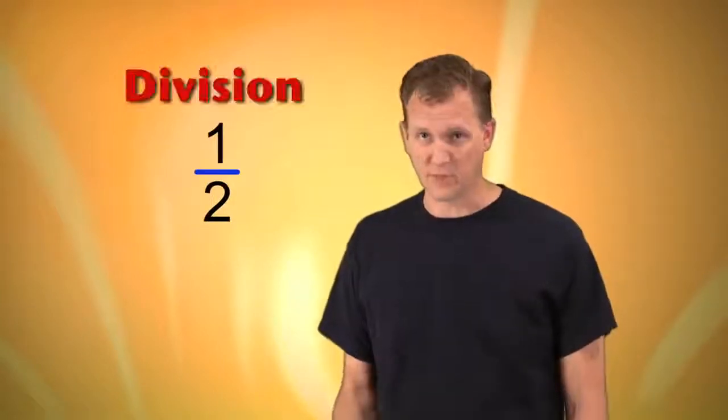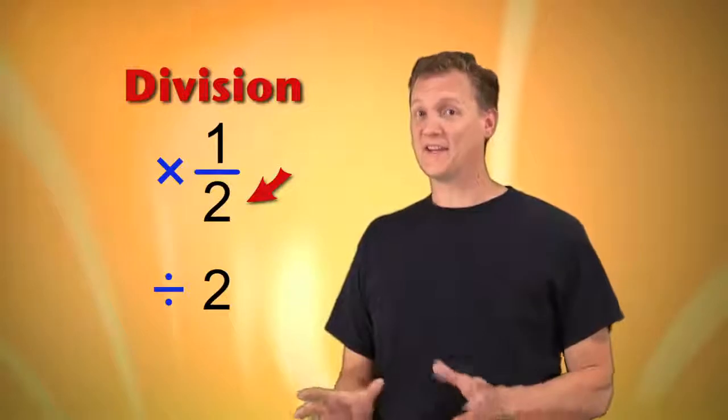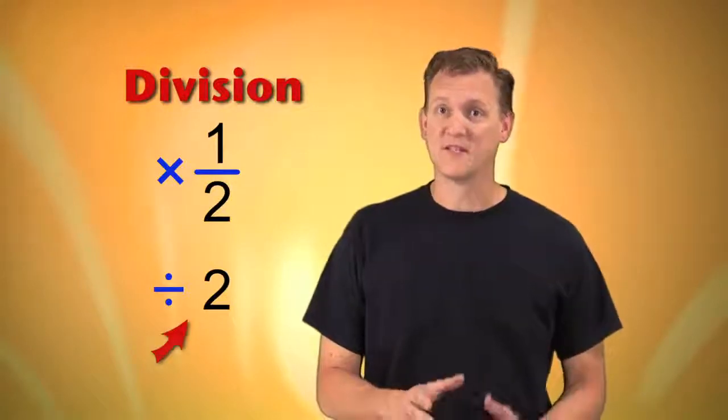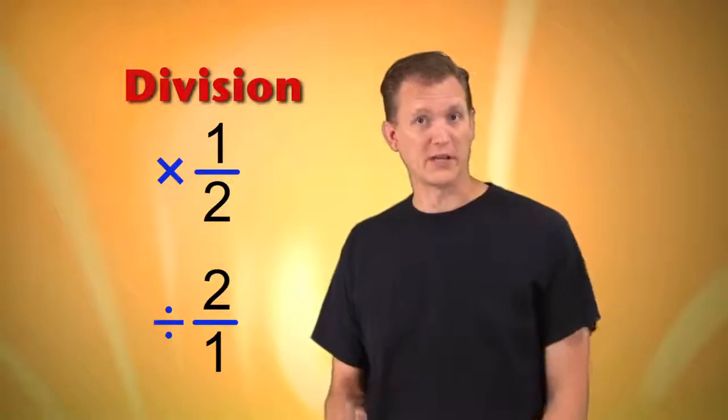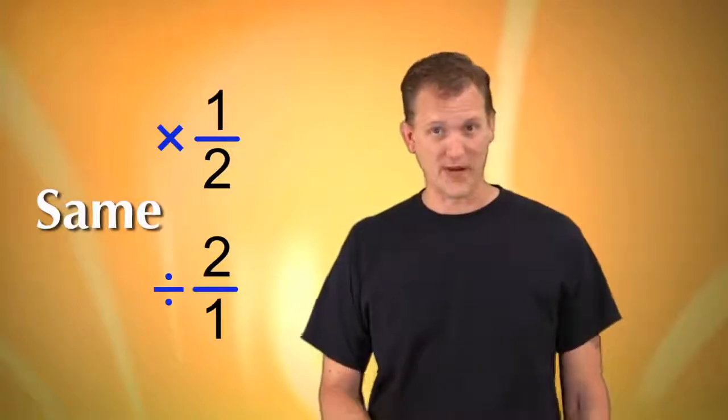This trick of multiplying by the reciprocal works because fractions are really just mini division problems. So when you multiply something by 1 over 2, it's the same as dividing by 2 since 2 is below the fraction's division line. And dividing by 2 is the same as dividing by 2 over 1 because you can turn any number into a fraction by just writing a 1 as the bottom number. But look! Reciprocals! That's why multiplying by 1 over 2 is the same as dividing by 2 over 1. And it's true the other way around, too.